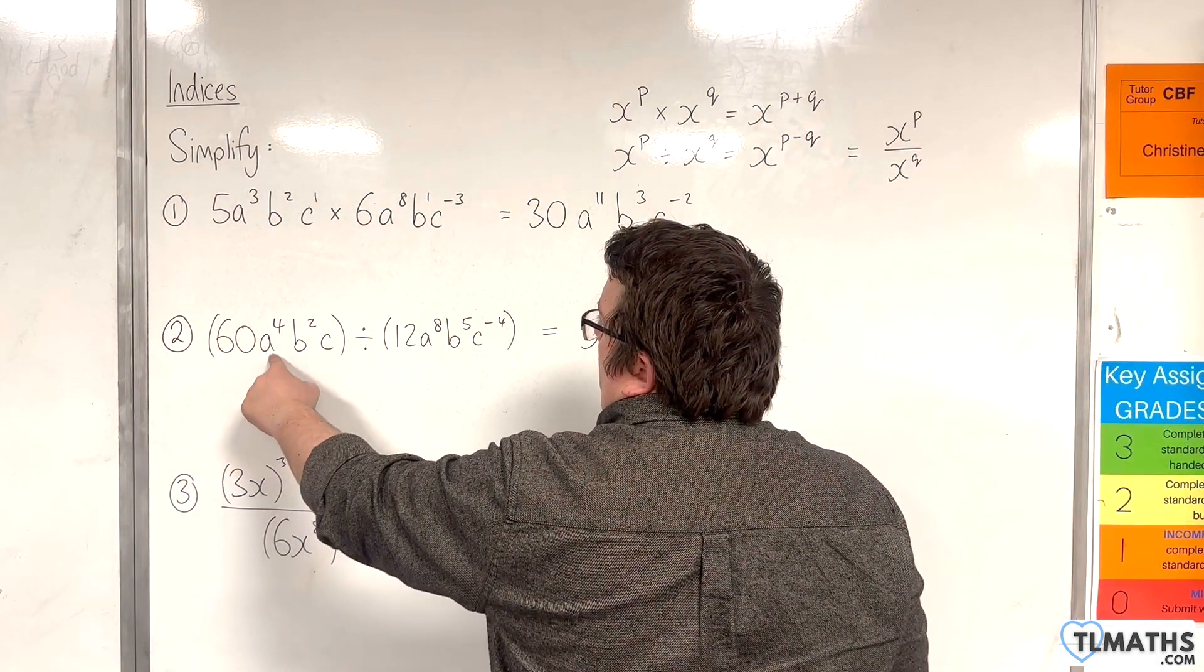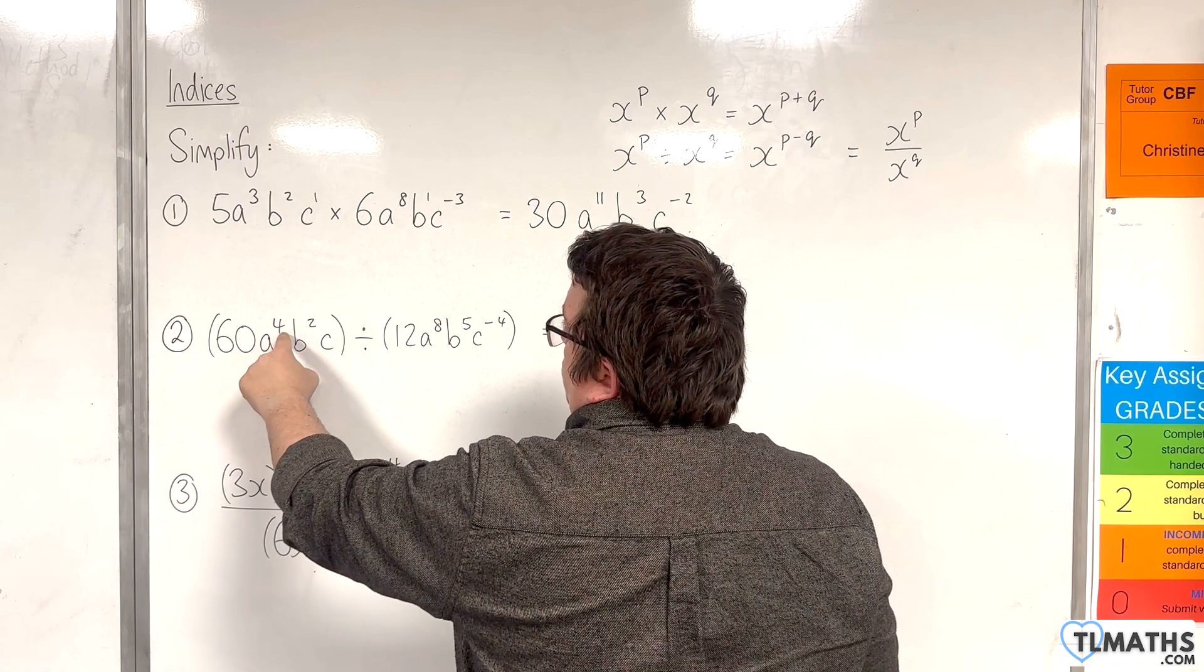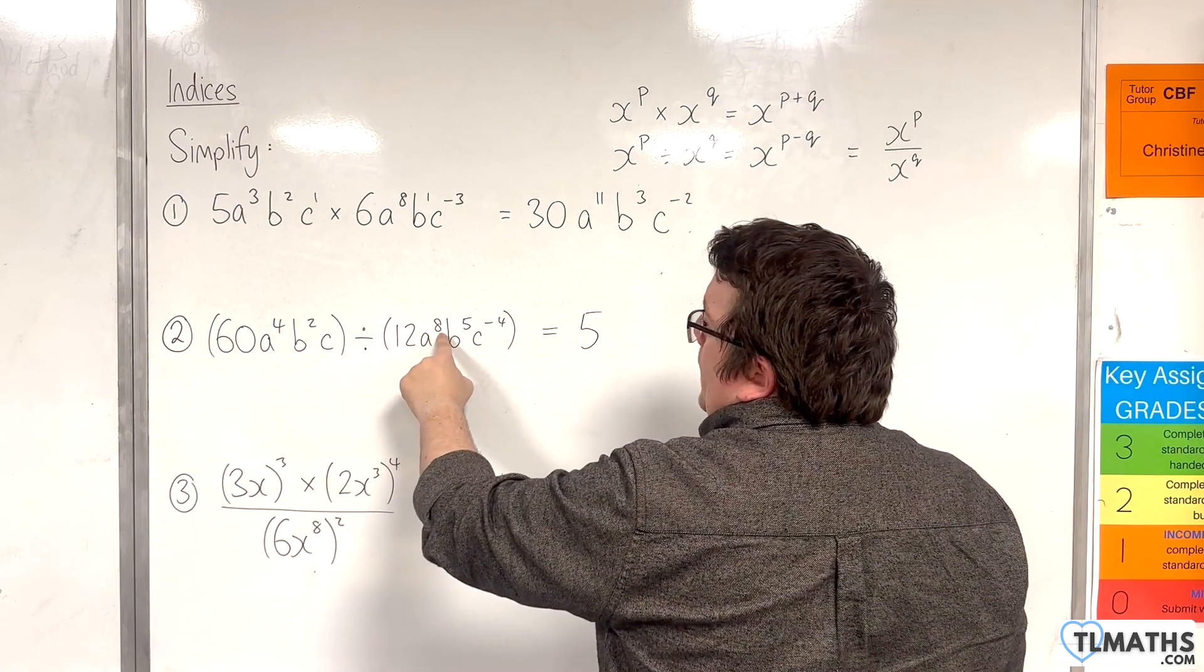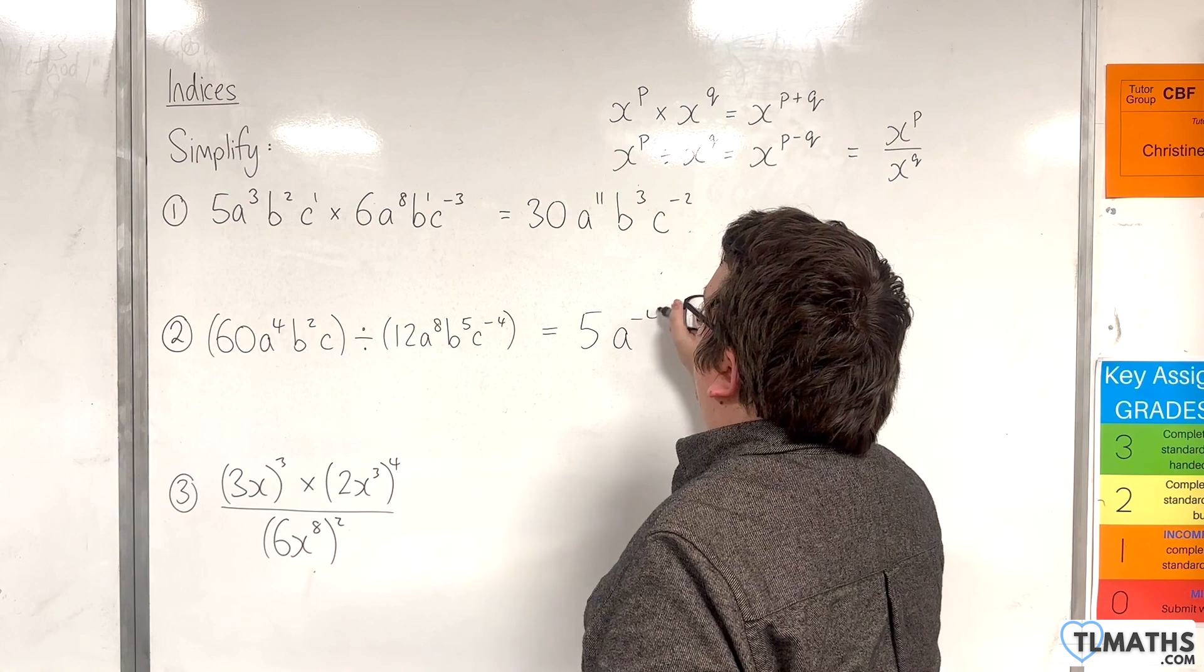So here we've got a to the power of 4 divided by a to the 8. So we need to subtract the indices, 4 take away 8 is minus 4. So a to the minus 4.